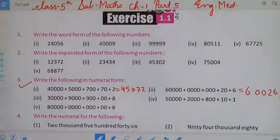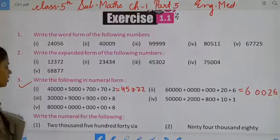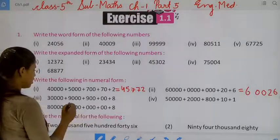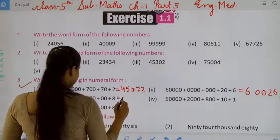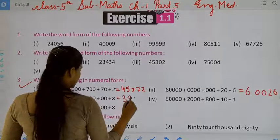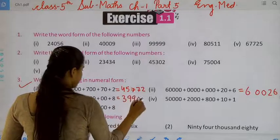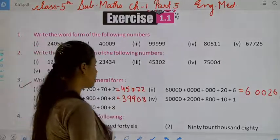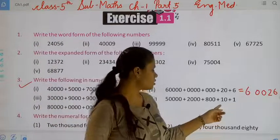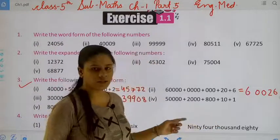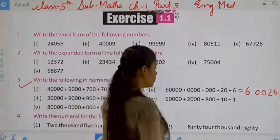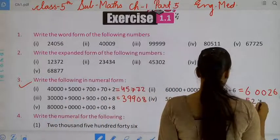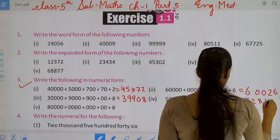Now move to the next — ones, tens, hundred, thousand, ten thousand. This will be, students, thirty-nine thousand, nine hundred, eight. Okay, now move to the next — ones, tens, hundred, thousand, and ten thousand. It will be fifty-two thousand, eight hundred, eleven.